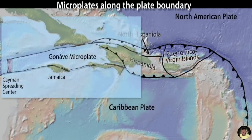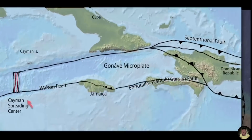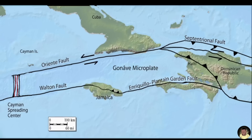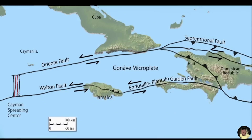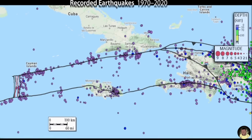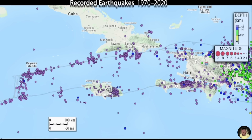The Gonâve Microplate stretches from the Cayman spreading center on the west to western Hispaniola on the east. The north and south boundaries of the Gonâve Microplate are dominantly left-lateral strike-slip faults with rates of motion about one centimeter per year. Most of the earthquakes occur on or near the microplate boundaries.